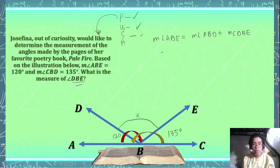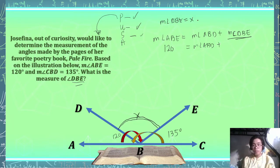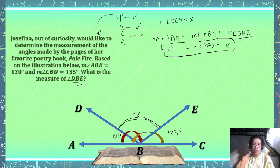We know that the measurement of angle ABE is equal to 120 degrees. That is equal to the measurement of angle ABD plus the measurement of angle DBE. Since we don't know the measurement of angle DBE, we call it X. So: the measurement of angle ABD plus X equals 120 degrees. That's our main formula for this one.